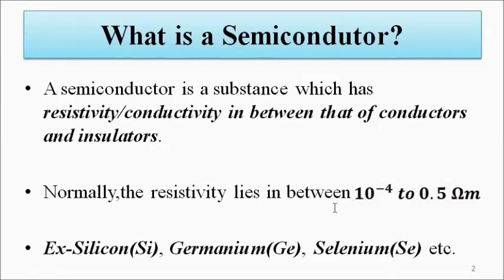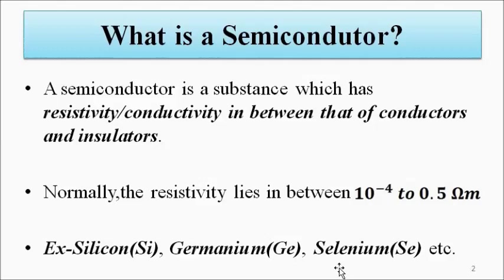The popular choices for semiconductors used in the electronic industry are silicon and germanium — these are elemental or simple semiconductors. Apart from that, there are other semiconductors such as selenium, and compound semiconductors also exist, which we will discuss in this video, along with the classification and the various ways we can classify them in terms of various properties.